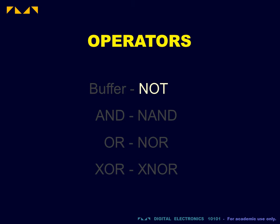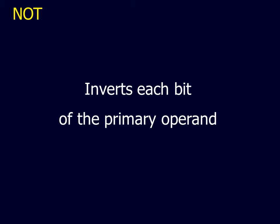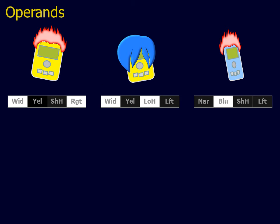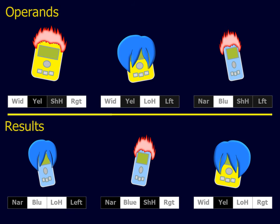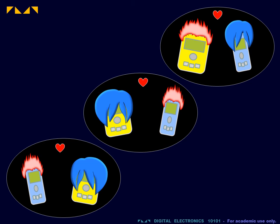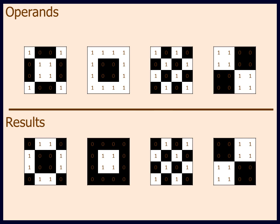We will first study the NOT operator. For the NOT operator, the result is obtained by inverting each bit of the primary operand. This will be demonstrated using three arbitrary operands. For the database application, inversion produces a new profile that is the opposite in every attribute from the original profile. This may be used to perform a search on the principle of opposites attract. For the image processing application, inversion produces a result called the image negative. In this image, the white pixels have been changed to black and vice versa.